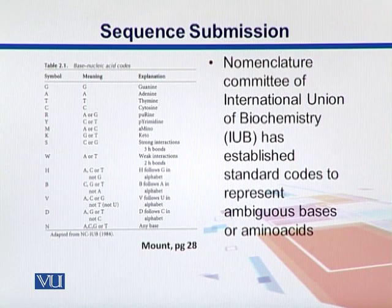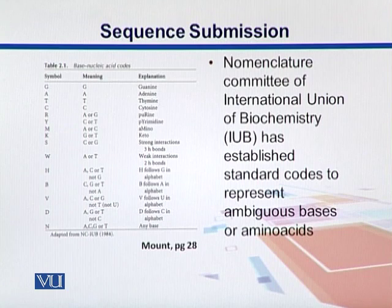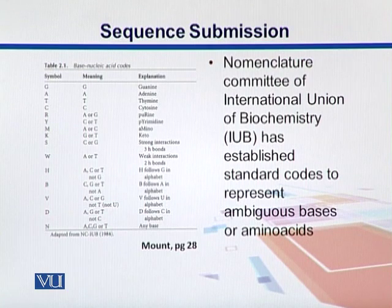M stands for bases having an amino group. K is for keto group, representing G or T. S is for strong interactions — three bonds — so C or G. W is for weak interactions, representing A or T.